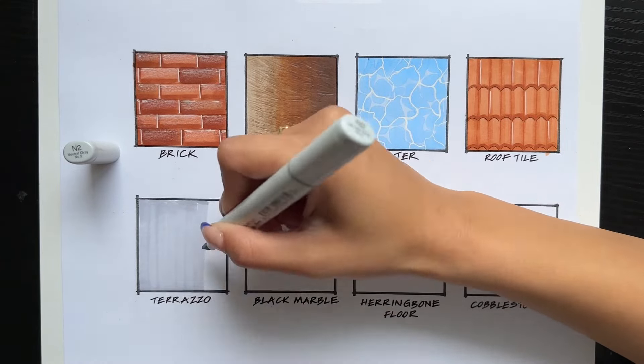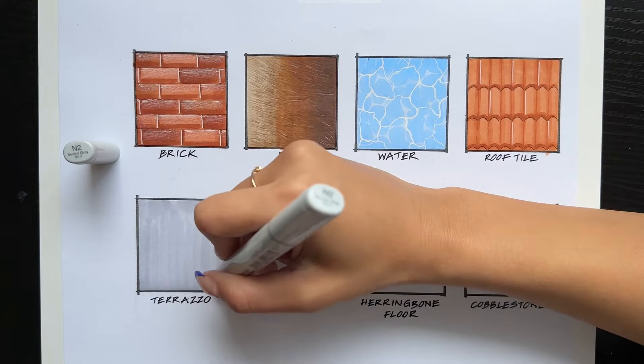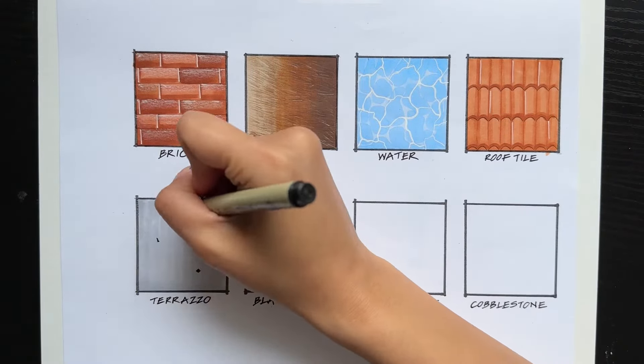Terrazzo is a super popular composite material. Here, I'm putting down two layers of a base coat. And you can choose any color scheme you want. I'm just doing mine gray for the background.